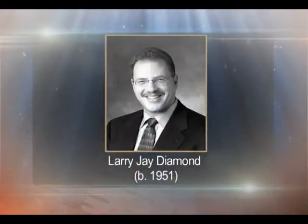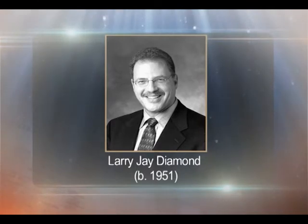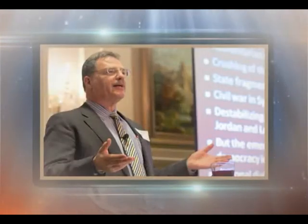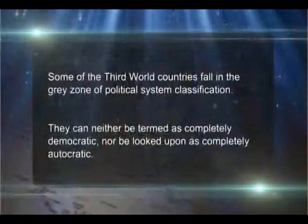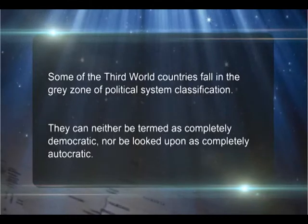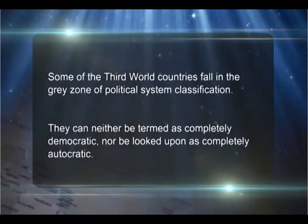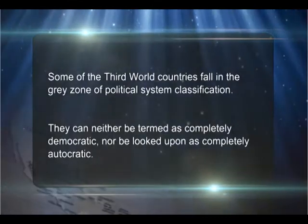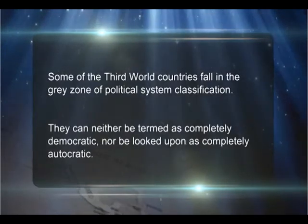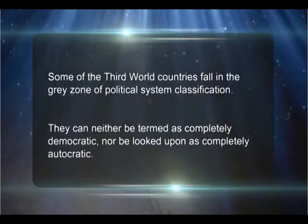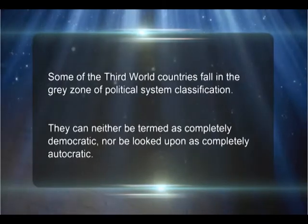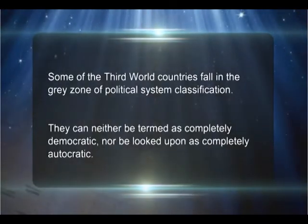The range and intensity of civil, political, social, and cultural rights enjoyed by citizens of these hybrid states are very limited compared to those in first world countries. So we see that basic features of both autocratic and democratic states persist and coexist. L. Diamond, in his 2002 article 'Thinking About Hybrid States', says that some of these third world countries fall in what he calls the gray zone of political system classification — they can neither be termed completely democratic nor completely autocratic.